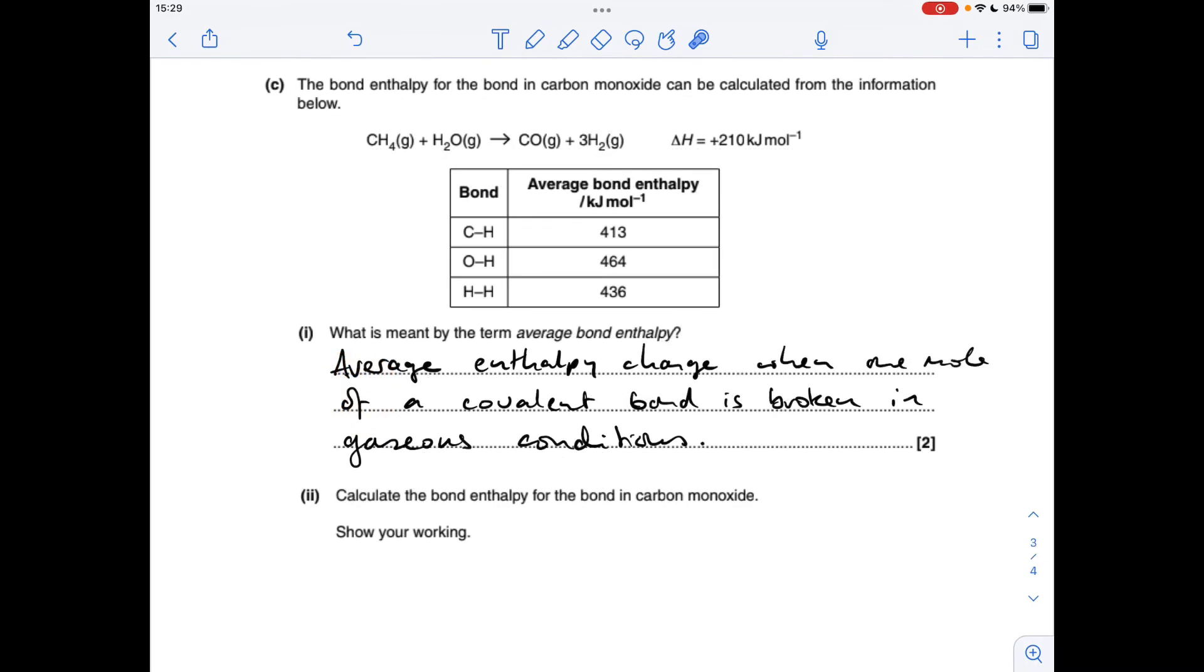Part C now, so it starts with another definition. The average bond enthalpy definition is the average enthalpy change when one mole of a covalent bond is broken in gaseous conditions. And then for the final part of the question, we've got to calculate the bond enthalpy for the bond in carbon monoxide.